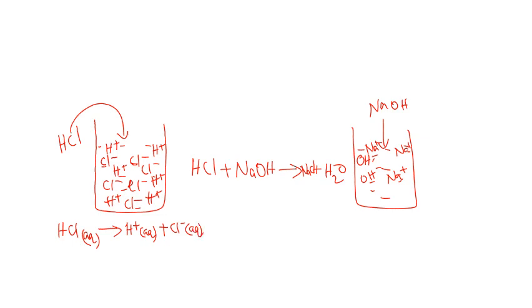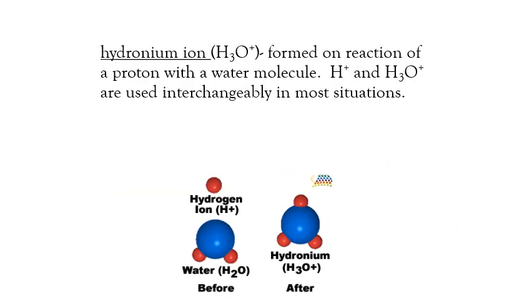For a base like NaOH in aqueous media, we get sodium ion (Na+) and hydroxide ion (OH-). When you combine the acid and base, the H+ ion from HCl combines with OH- from the base to form H2O, and we get the salt NaCl. The hydrogen ion produced in aqueous media will not stay free — it combines with water to form H3O+, which we call the hydronium ion.